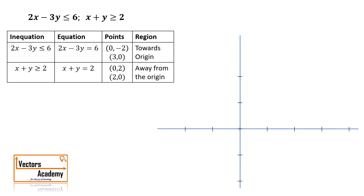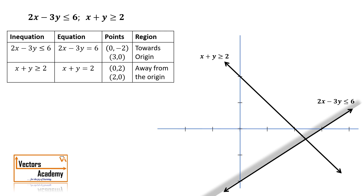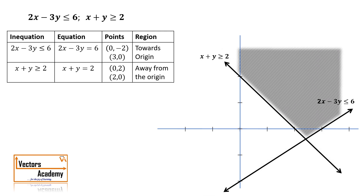We plot both lines on the graph. Point (0, -2) on the negative y-axis and (3, 0) on the x-axis give the first line. Points (0, 2) and (2, 0) give the second line. For the first inequation, the region towards the origin is above the first line, so we shade above it. For the second inequation, the origin lies below the second line, but we need the region away from the origin, so we shade above the second line as well. The common region satisfying both inequations is the area above both lines.